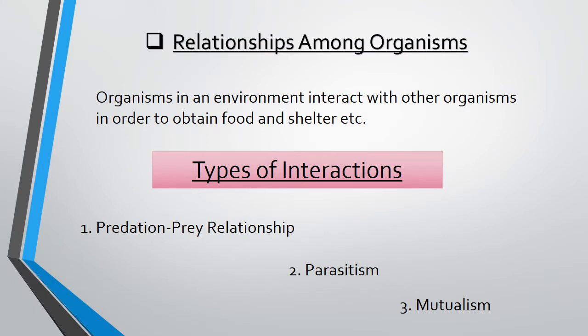What is the meaning of all living organisms in our environment, and what is the connection between them in which they interact with each other? Organisms in an environment interact with one another in order to obtain food and shelter. The main purpose of their interaction is to obtain food or shelter.